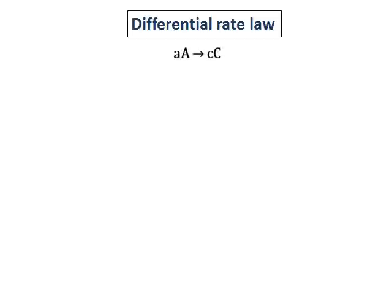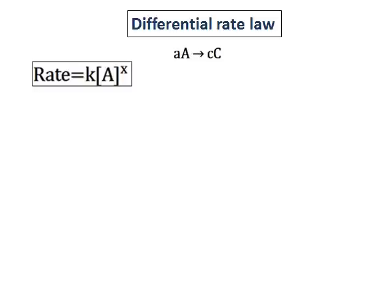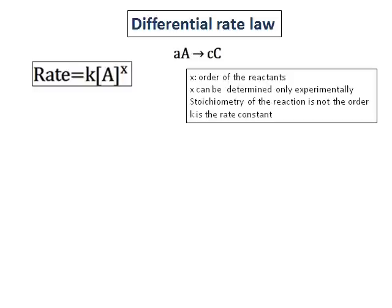We will do some questions on differential rate law in this video. Before that, we will revise what differential rate law is. Differential rate law is: rate = k × [A]^x. As we have learned before, k is the rate constant and x is the order of the reaction.